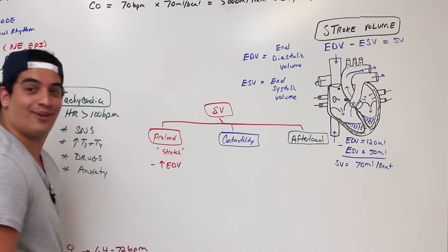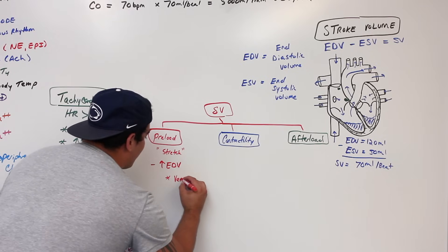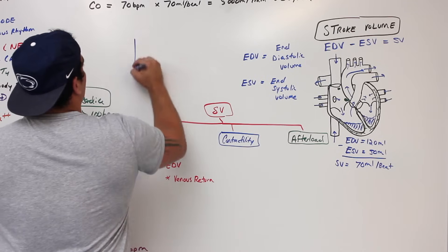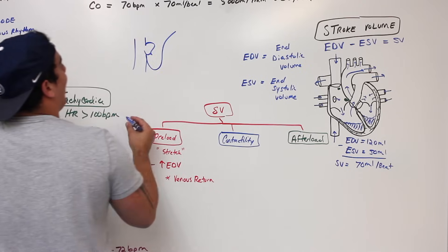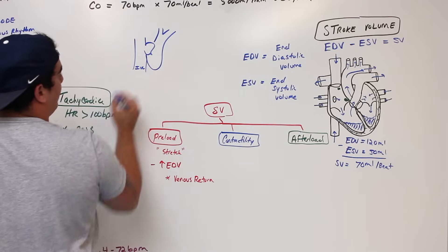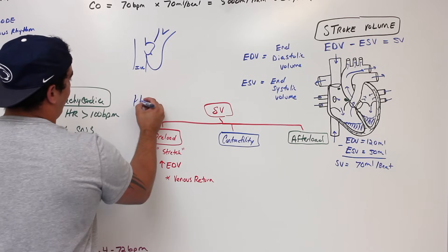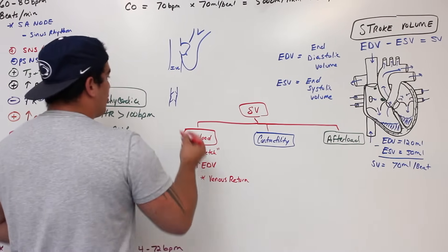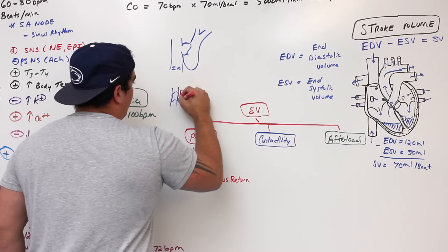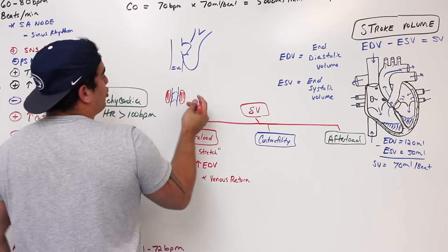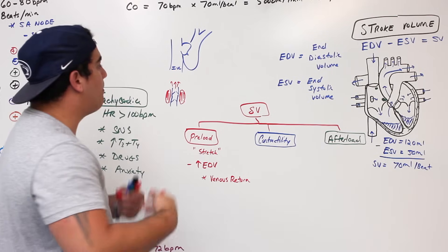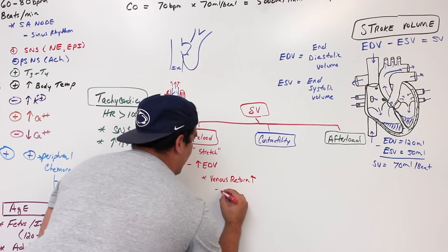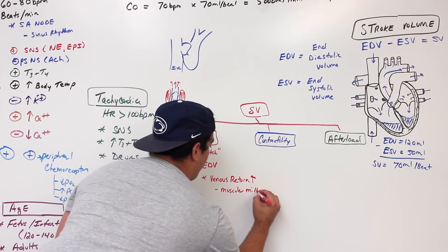Increasing end diastolic volume increases preload. One way to increase EDV is through increased venous return. Muscles near the veins contract and squeeze them, helping pump blood upwards — this is called the muscular milking activity. Increasing muscular milking is one way to increase venous return and thus increase preload.